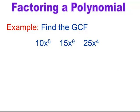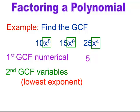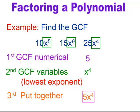When you have a combination of a numerical part and a variable, first find the GCF of the numerical part. Looking at 10, 15, and 25, the GCF has to be a number that divides evenly into each — the greatest common factor is 5. Then for the variable part, it will always be the variable with the lowest exponent, which is x to the fourth. So the GCF is the two pieces put together: 5x to the fourth.